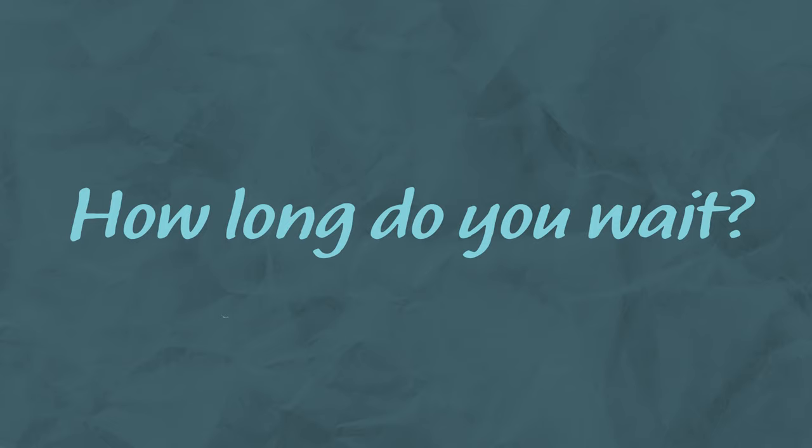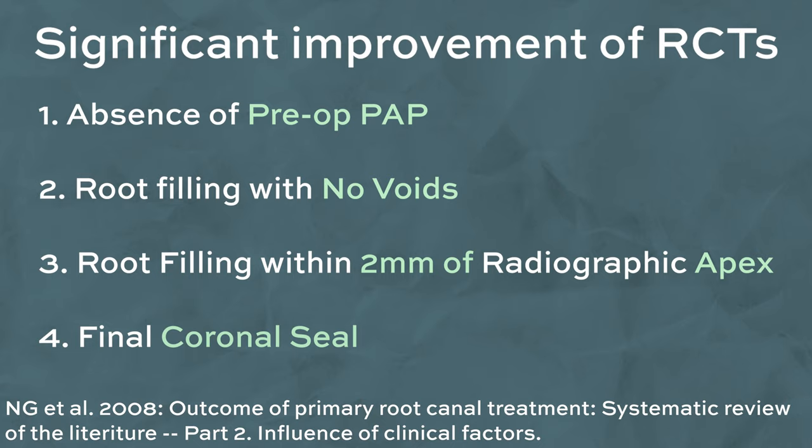Engie et al. in 2008 identified four things which significantly improve the outcome of primary root canal treatments. The fourth on the list is a final coronal restoration. We should all consider the immediate coronal seal as the final part of root canal treatment — it shouldn't be the case that you have obturated and the patient is still in pain while you wait before doing the coronal seal. Instead, this coronal seal should be done immediately after the root canal treatment.